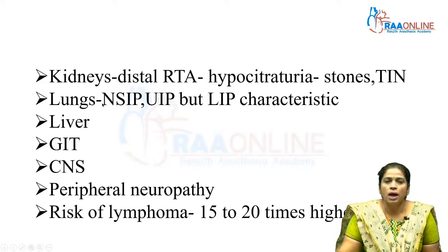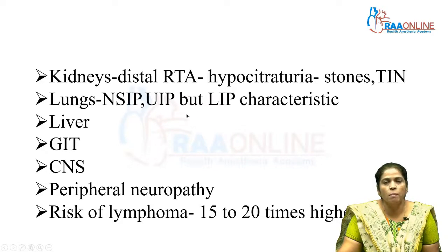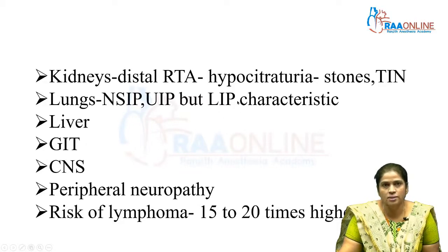The lung involvement can be nonspecific interstitial pneumonia or usual interstitial pneumonia, but lymphocytic interstitial pneumonia is the one that is characteristic of Sjögren's.